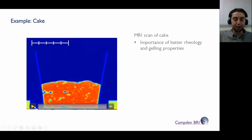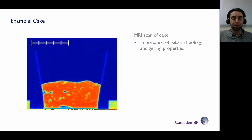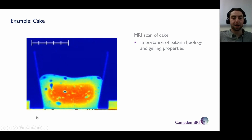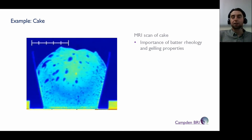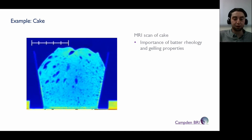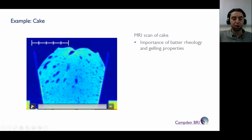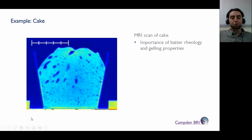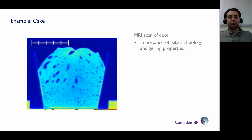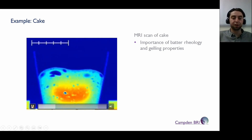Another thing we can do with cake — though it does require hiring a medical CT scanner, which is not the cheapest thing — is using an MRI scanner. This was an example of a medical MRI scanner which we had in our car park on a few occasions. We have a custom-built oven and we can monitor the density during baking — it's a really useful research tool. The key to these slides is to think about what it is about the physical properties of my ingredient that are important for my product — in this case, the cake. The batter rheology, allowing it to expand but then setting at the correct time, is really important to prevent collapse.